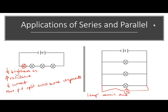The total resistance decreases when a lamp is added in parallel, because there's an extra path for current to flow. The current splits between four branches instead of three. The potential difference is the same in each branch, so there's a constant energy per coulomb and the brightness remains the same.